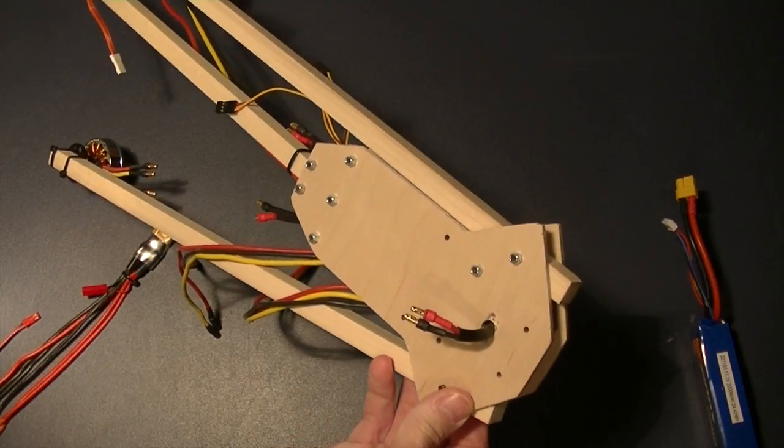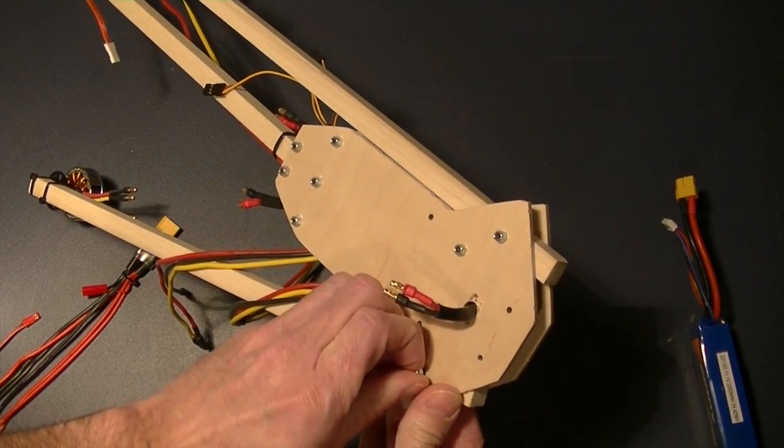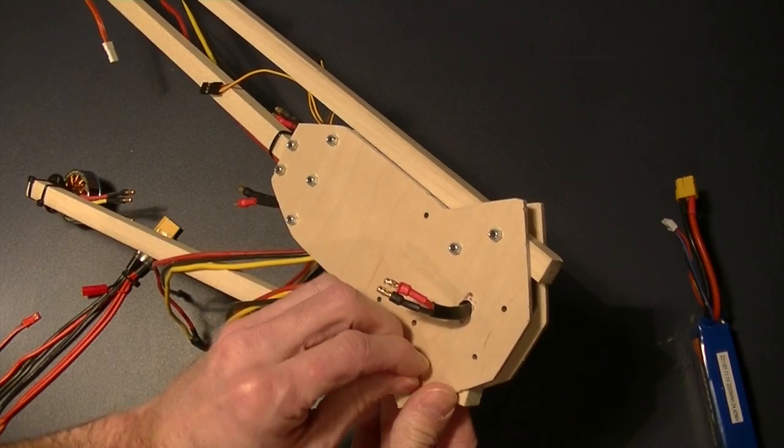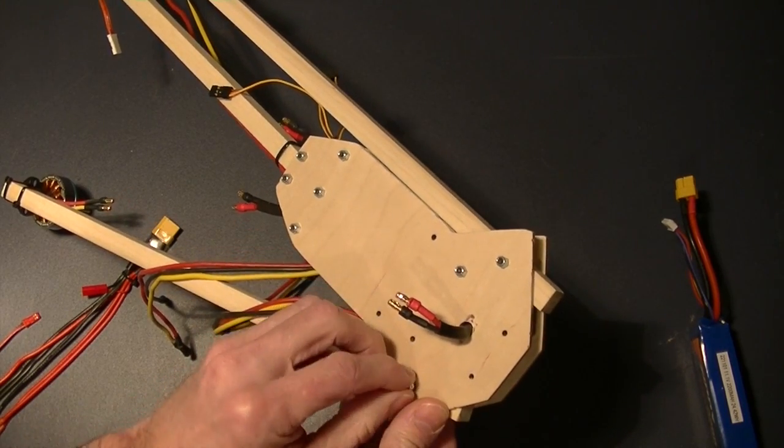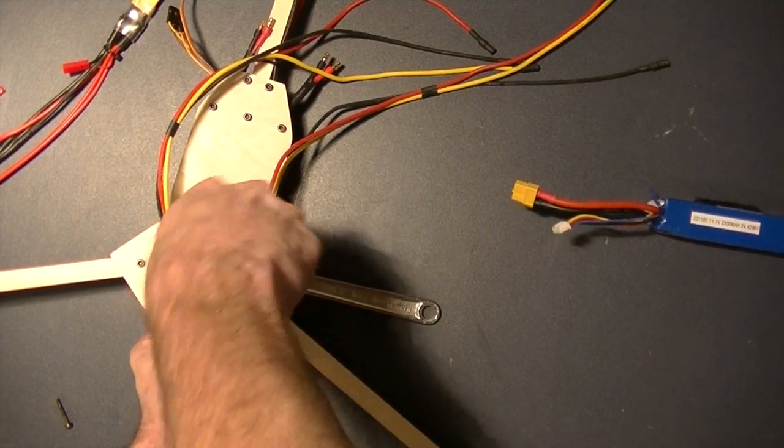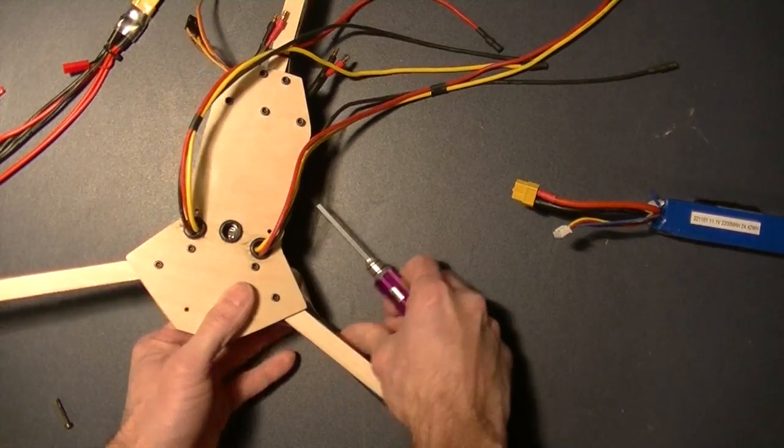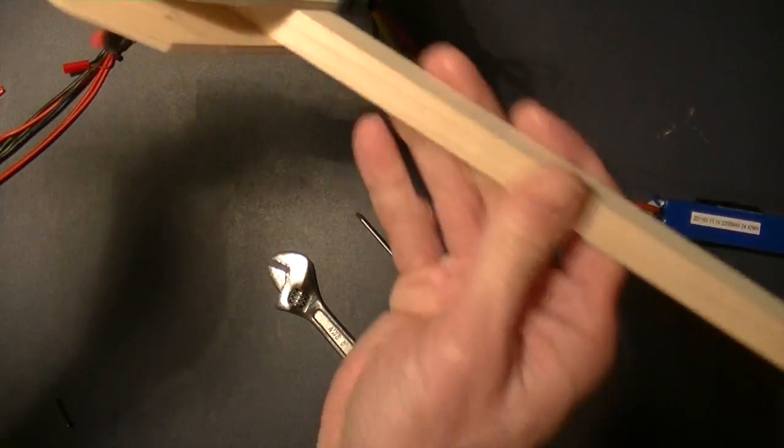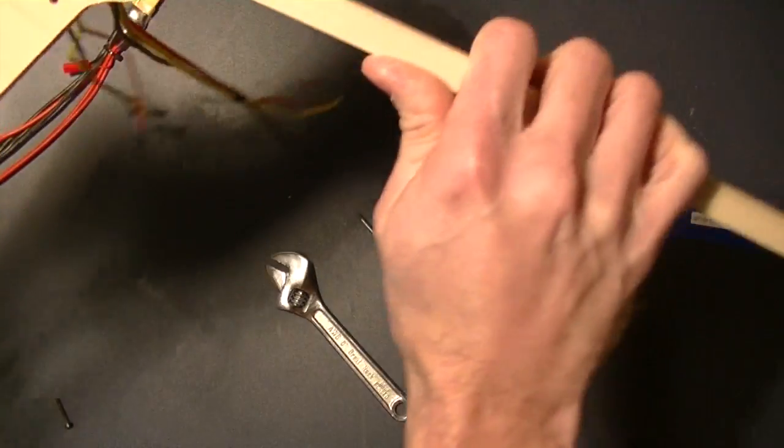Now I'm fastening the arms to the body. As you can see here and recall from the designs, the pivoting screw, the one that the arms pivot on, is the one closest to the point of the body design. I also make sure to make a quick peek as I'm getting things tightened down to make sure that all of my wires are out of the way and there's nothing interfering with the rotation of the arms.